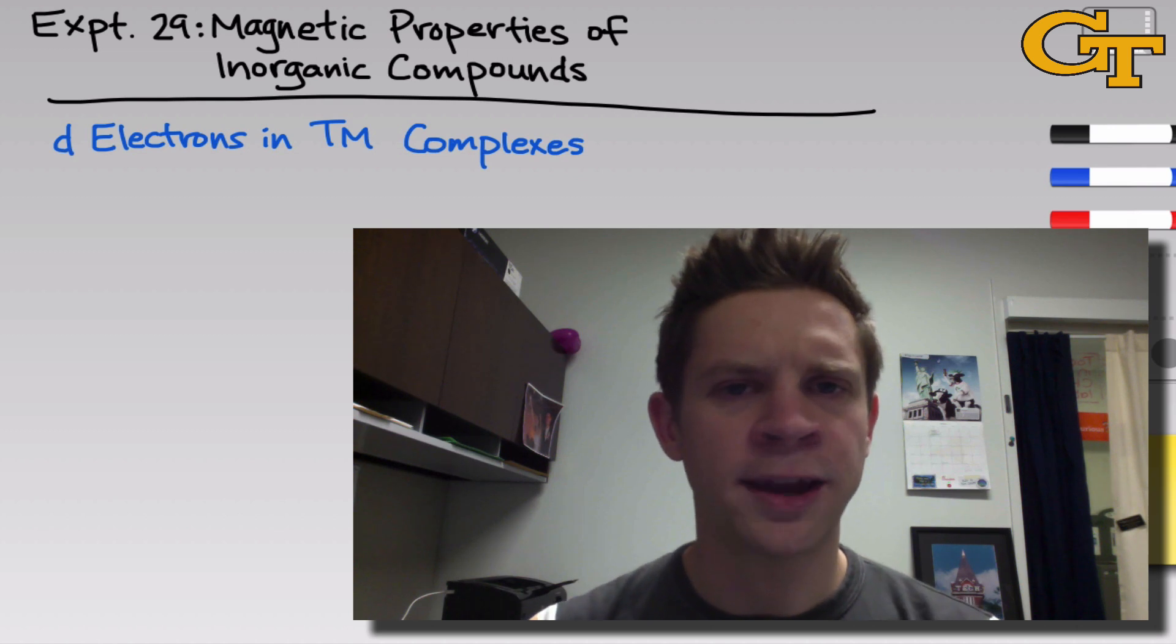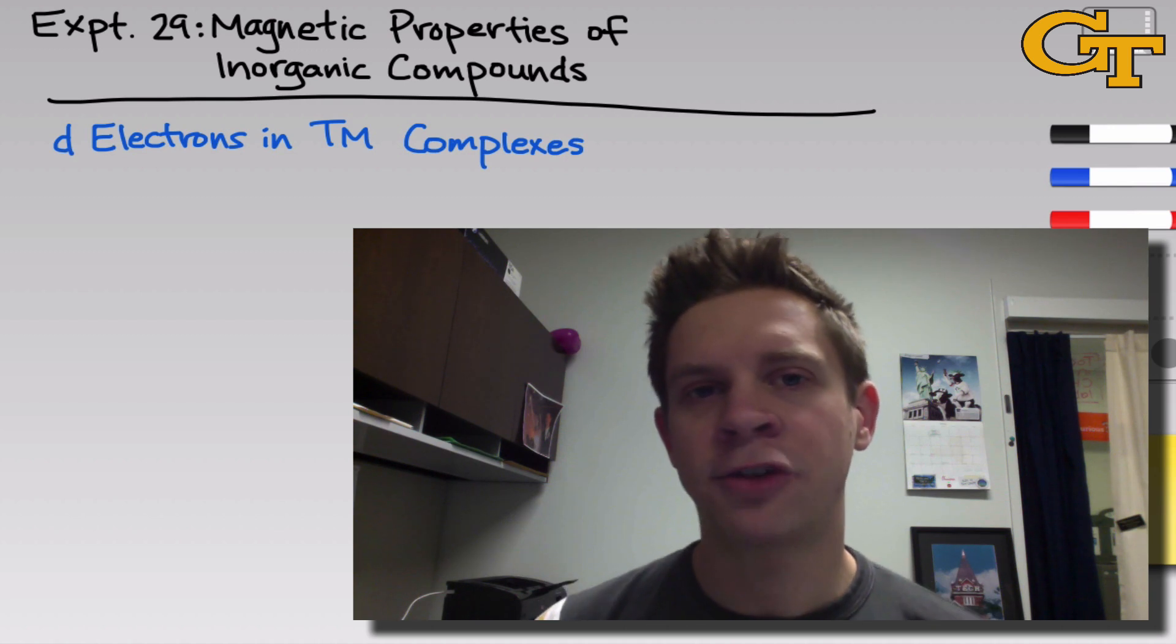As we've seen, coordination complexes can contain unpaired electrons. Because we can think of an electron in an atom as a little spinning charged particle, electrons have magnetic properties, and unpaired electrons specifically have very strong measurable magnetic effects.